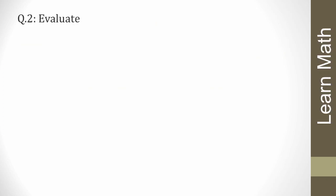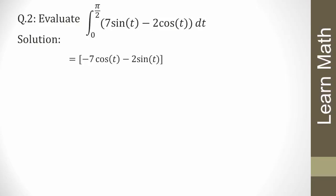The next question: evaluate the definite integral from 0 to π/2 of (7 sin t − 2 cos t) dt. Since the integration of sin t = −cos t and the integration of cos t = sin t, we can write [−7 cos t − 2 sin t] with limit 0 to π/2.